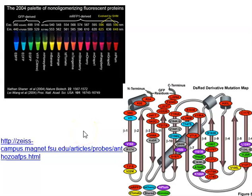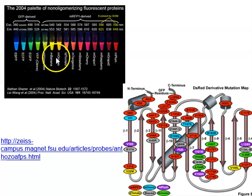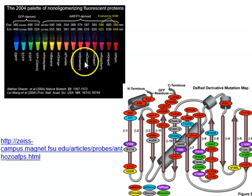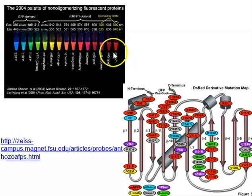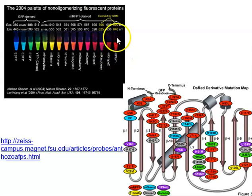The range of fluorescent protein colours has expanded enormously: enhanced blue, enhanced cyan, enhanced green, then yellows, M-orange, M-banana, M-tangerine, M-cherry, and M-plum at the far red. Red and infrared spectrum fluorescent proteins are particularly useful because red light penetrates tissue much more effectively than blue or green light. This is highly beneficial for in vivo imaging in animals, as we'll see shortly.